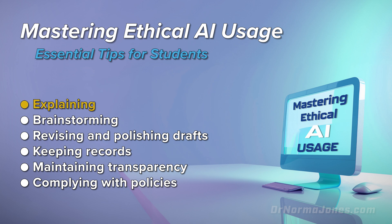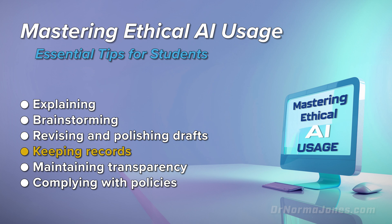First, we will explore how AI can help explain things such as concepts and assignments. Second, AI can help you brainstorm ideas. Third, AI can help with revising and polishing drafts before submitting your assignments. As a student, it is helpful to keep records of your AI usage so that you can clearly differentiate between your work and your technology assistance. You should also maintain transparency when submitting work using AI assistance. Lastly, we should keep up to date with your school's and teachers' AI usage policies.